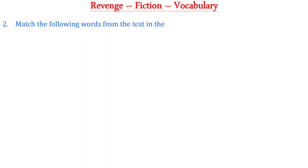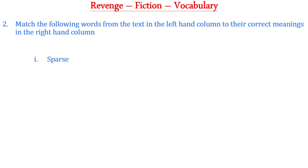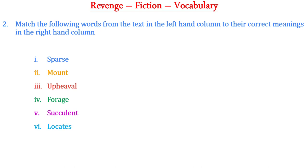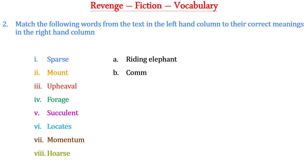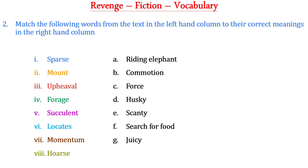Question number two: match the following words from the text in the left-hand column to their correct meanings in the right-hand column. The words are: sparse, mount, upheaval, forage, succulent, locates, momentum, horse. The meanings in column B are: riding elephant, commotion, force, husky, scanty, search for food, juicy, and finds. The correct meaning of 'sparse' is 'scanty'.